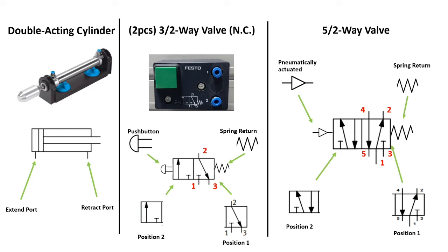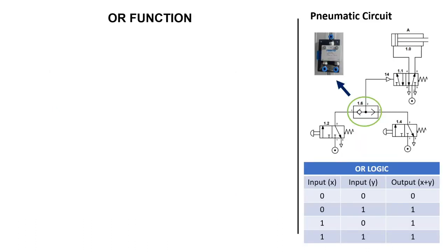This time we will be using double acting cylinder. And we will add five two-way directional control valve as our final control element. So this will be our circuit. And of course, an OR valve is present.